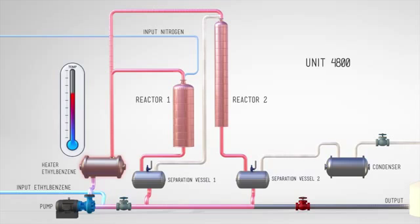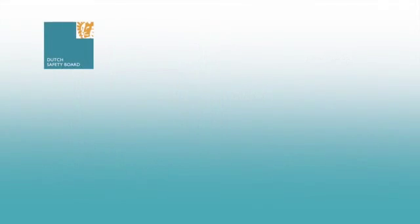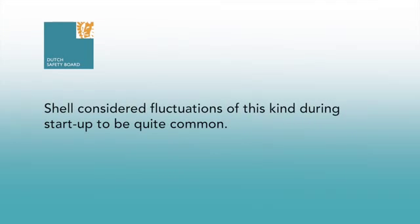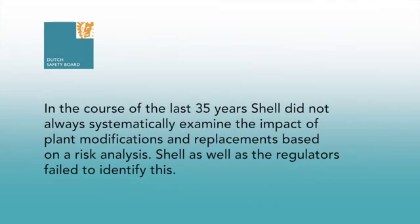However, operations did not intervene, as fluctuations in both fluid and temperature levels were quite common during start-up. The Dutch Safety Board has concluded Shell considered fluctuations of this kind during start-up to be quite common. In the course of the last 35 years, Shell did not always systematically examine the impact of plant modifications and replacements based on a risk analysis. Shell, as well as the regulators, failed to identify this.